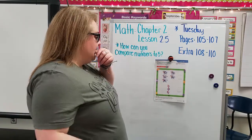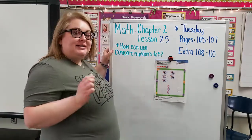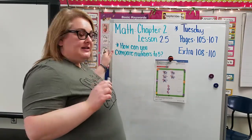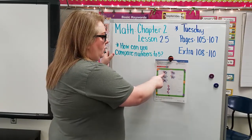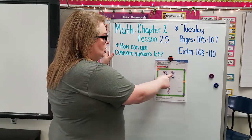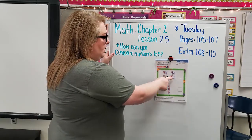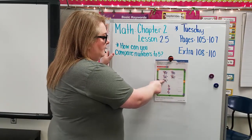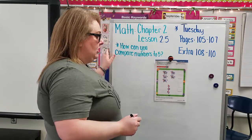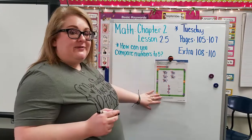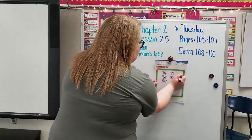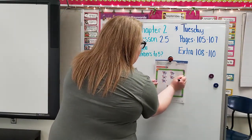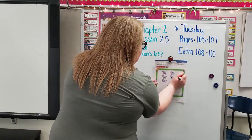So what we're going to do is we're going to first count each of the sets. For the cows we have one, two, three, four, five. So we have five cows. Slide down, curve it around, and give it a hat.